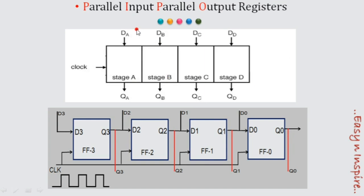The important point here is that the input is parallel to the register and the output is also parallel. A clock pulse is applied. I am using D flip-flops to implement this register — four flip-flops in total. Inputs are taken parallelly as D3, D2, D1, D0 and outputs are taken parallelly as Q3, Q2, Q1, Q0. Clock pulse is applied to all the flip-flops.